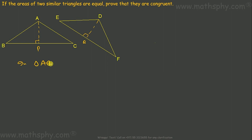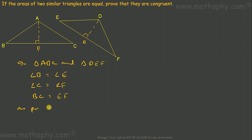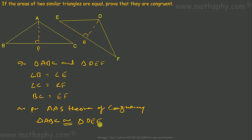In triangles ABC and DEF, angle B equals angle E and angle C equals angle F, as corresponding angles from the similarity, and we have just proved BC equals EF. So by the angle-angle-side theorem of congruency, triangle ABC is congruent to triangle DEF.